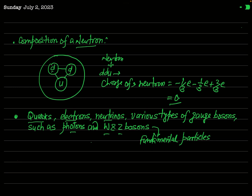Since these particles have no internal structure, it is thought that they are the fundamental particles. So you can say that quarks, electrons — or in general leptons — and various types of gauge bosons like photons and W and Z bosons are actually the fundamental particles, because these have no internal structure.